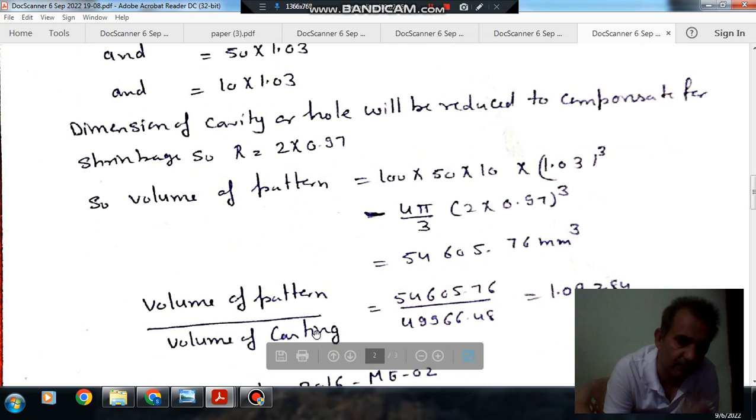So that is the volume of the pattern and volume of pattern by volume of casting is 54605.76 divided by 49966.48, that is 1.0933.